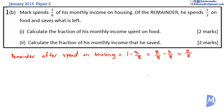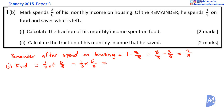Of the remainder, he spends one third on food. So the fraction spent on food is equal to one third of the remainder — one third of 5 eighths. We know that 'of' means multiply, so it's equal to one third multiplied by 5 eighths. There's nothing that can cancel, so we get 5 over 24.